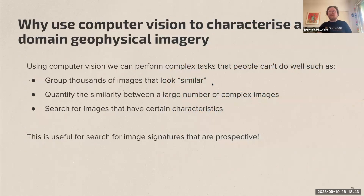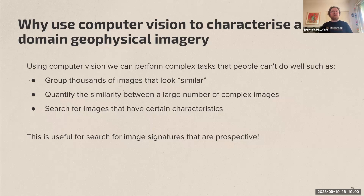Why would we want to do this? We want to do things that people don't do well, including looking at a very large amount of imagery very quickly and comparing the similarity between images in a quantitative, numerical way. This enables a search-by-similarity type process — things that people can do to a degree, but which don't play to the strengths of human interpreters.